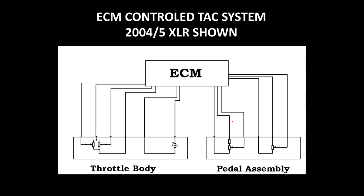The functionality is basically the same across all designs. An XLR with an ECM-controlled TAC system has potentiometers mounted in the pedal assembly feeding voltage values back based on throttle position. The ECM buffers that data, figures out what the actual throttle position is, determines what command is needed for the TAC motor to control the throttle plate position, and then uses potentiometers mounted on the side of the throttle body to confirm that the motor command is correct.